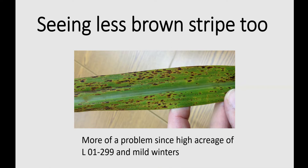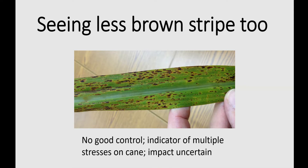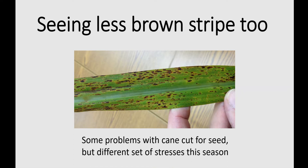We're probably seeing less of that this season — the crop is behind and we're just not seeing as much of it. There is no good control measure for it; it's really an indicator that multiple stresses are affecting the cane, and most of the time it's been early in the season so we're not even sure what the impact is on growth and yield. We don't have a good way to control it selectively to find out how it's affecting the crop, but we're trying to get some variety ratings. There have been some problems in seed cane fields where it's been cut for seed and trying to regrow, but it's really been a different set of stresses this season with the later freeze and wet conditions, so brown stripe hasn't been as prevalent as in previous years.